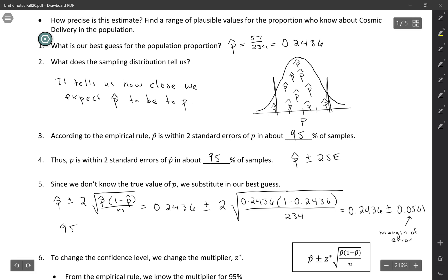So if we work this out, that'll give us the 95% confidence interval. So putting that together, the lower end, if we subtract, we get 0.1875. And if we add, we get 0.2997. So that's our range of reasonable values for the parameter. We think that the population parameter is somewhere between those values.